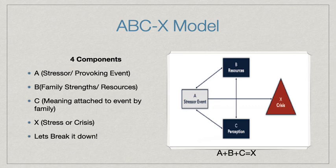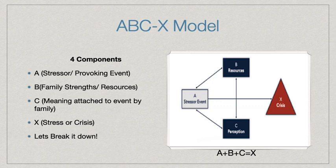Now let's get to the ABCX model. The ABCX model is made of four components: A, which is the stressor-provoking event; B, family strength and resources; C, the meaning attached to the event by the family; and X, which is the stressor or crisis. A way to see the ABCX model is A plus B plus C equals X, meaning stressor plus family resources plus meaning attached equals crisis.